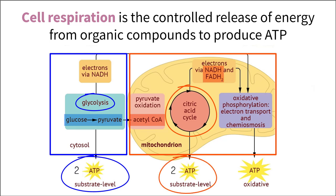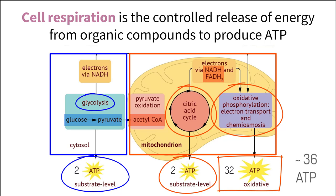These high energy carrying molecules then enter the electron transport chain, which, along with oxygen, create a large amount of ATP, yielding around 32 per glucose molecule that comes in, bringing the total to around 36 ATP molecules. Once created, this ATP can be used to power cellular processes that maintain normal cell function and homeostasis.